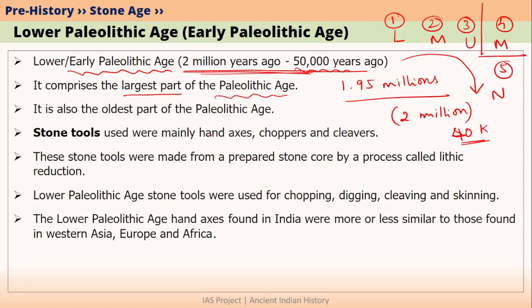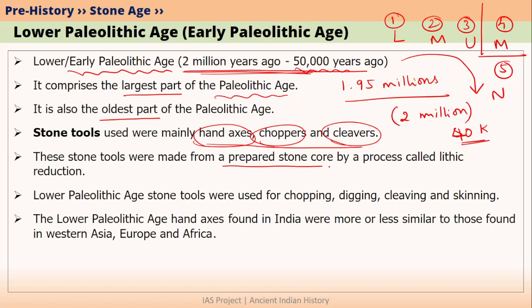As the Lower Paleolithic Age was the first part of Paleolithic Age, it can also be called the oldest part. The stone tools used during Lower Paleolithic Age were mainly hand axes, choppers, and cleavers. All these stone tools were mainly made from a prepared stone core, and such method of preparation was called lithic reduction.